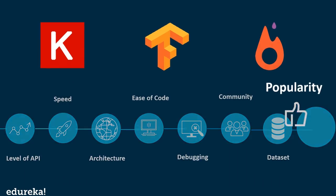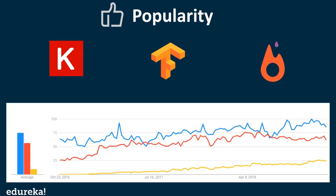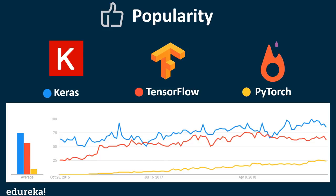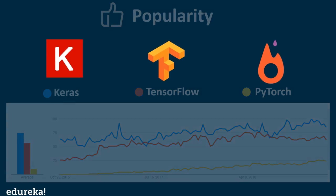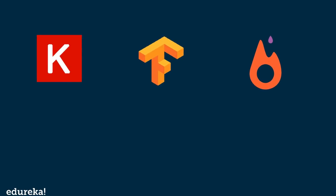The final parameter of comparison is popularity. All three frameworks have gained quite a lot of popularity recently, but Keras tops the list, followed by TensorFlow and PyTorch, having gained immense popularity due to its simplicity. There is no straight answer to which one is actually better — the choice ultimately comes down to your technical background, needs, and expectations. So let's look at the suitable situations where these frameworks should be used.